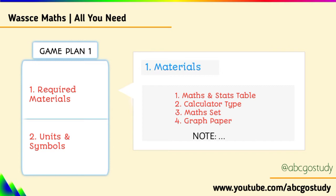Looking at the next material, we have a ruler, protractor, pair of compasses, and set squares. Just get a math set — this would cover all those required materials. You can get a long ruler as well, because there are some measurements that would require you to use a long ruler.